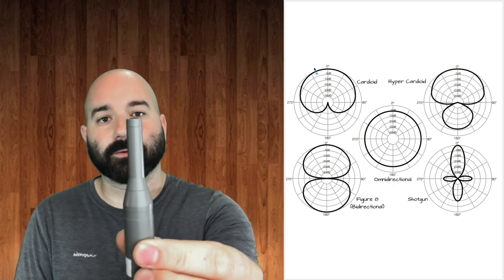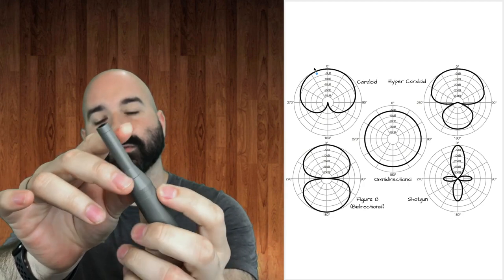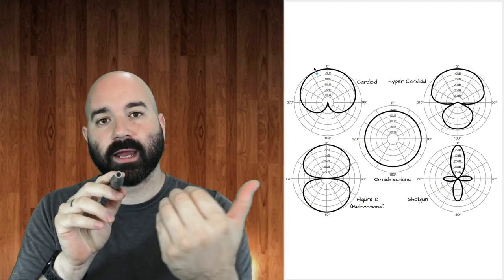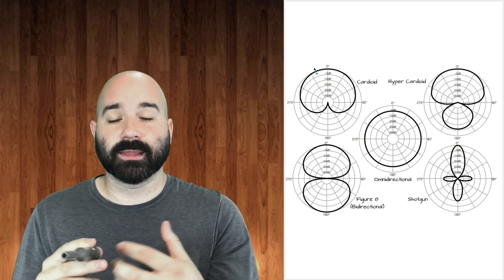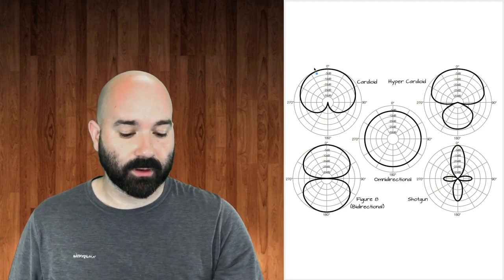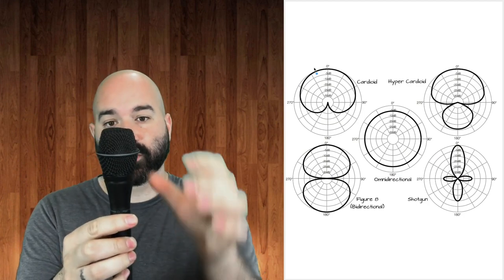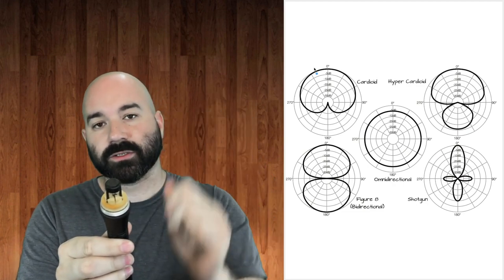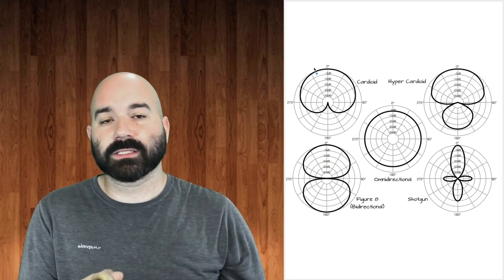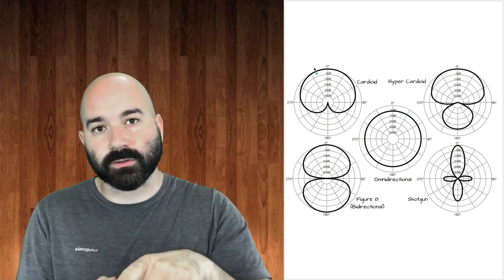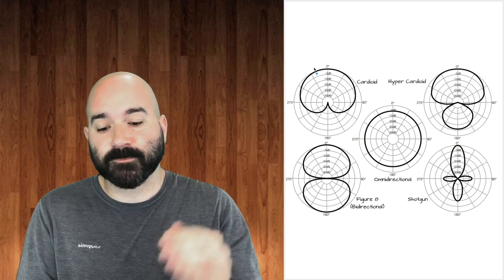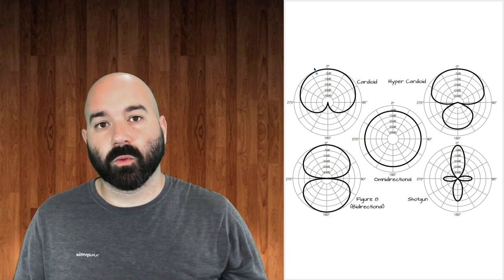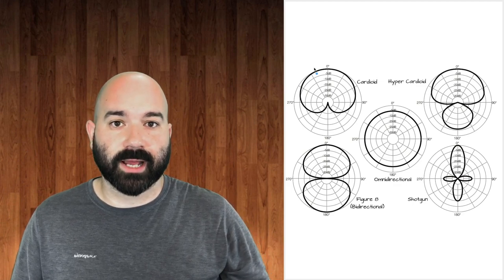An omnidirectional microphone has no holes or ports in the side—sound only enters from the front and hits the diaphragm from one side, which is why it collects sound from all directions. Other microphones, like this vocal mic, have holes underneath so sound can enter and hit the diaphragm from both front and rear. Since sound travels at a specific speed, it arrives at the front first and the rear later—and that time difference can be calculated to cancel out specific frequencies, giving us directionality.